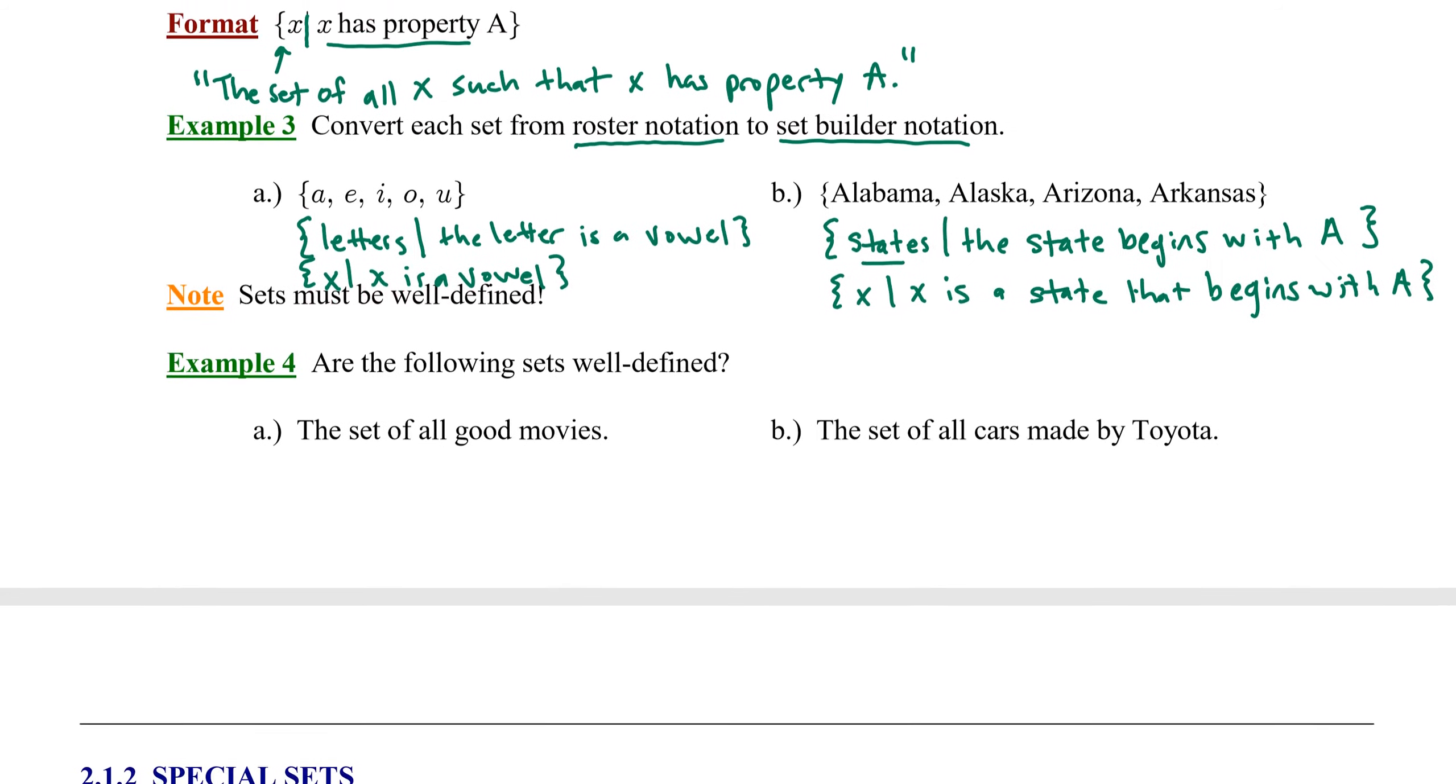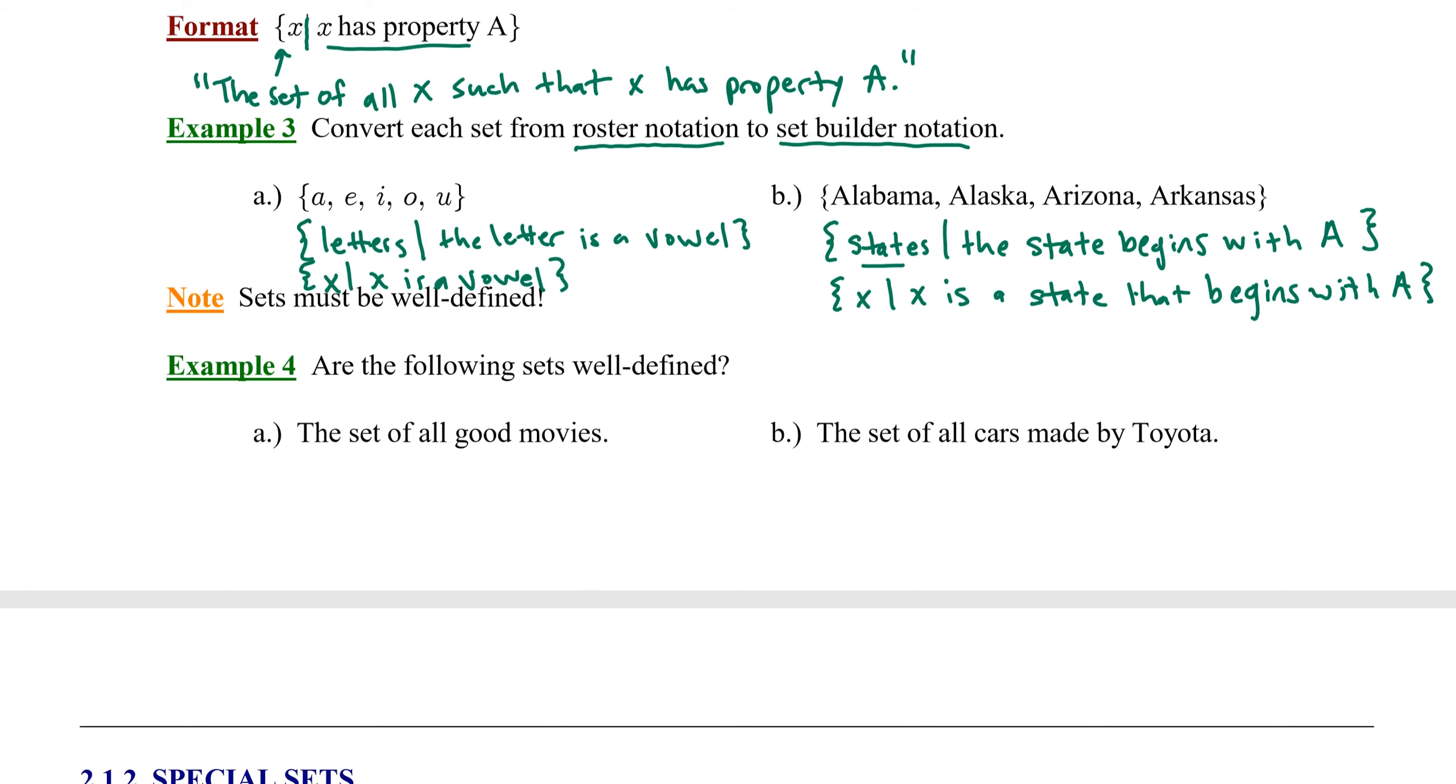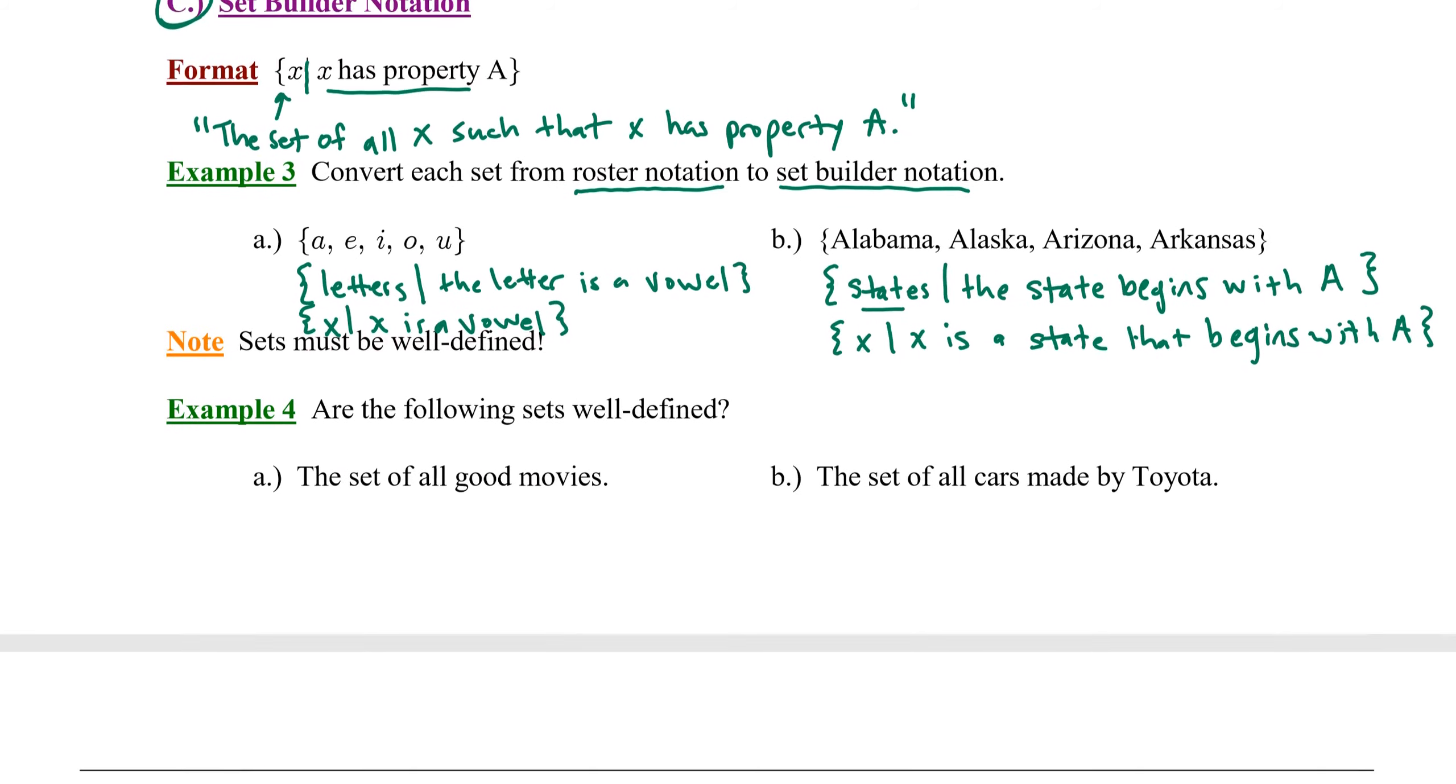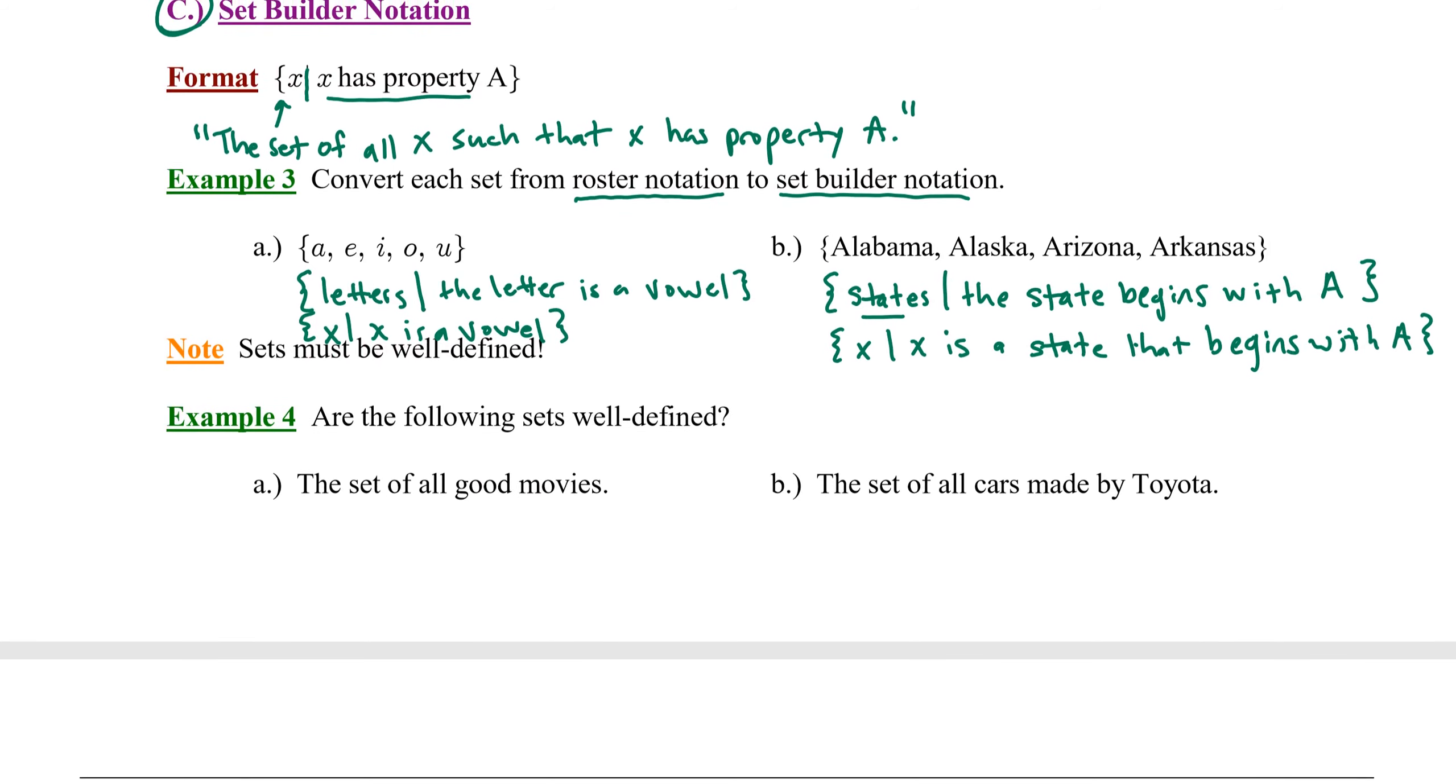Note, sets must be well defined. Example four, are the following sets well defined? A. The set of all good movies. Let's suppose we want to list the set of all good movies in roster notation, and we begin building this set. We might find that we don't all agree on what composes a good movie. So this one is not well defined. There is dispute as to which elements belong to that set.